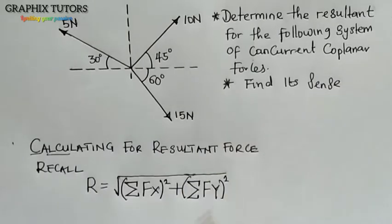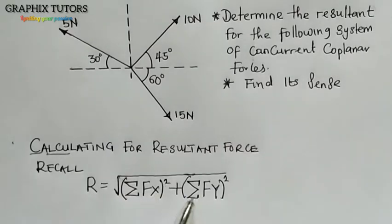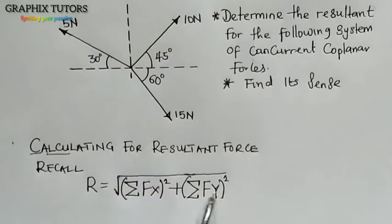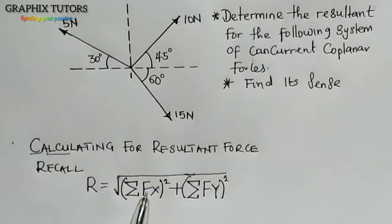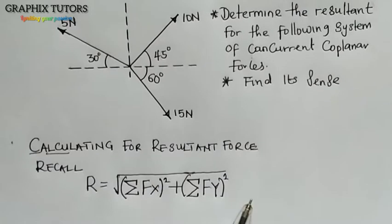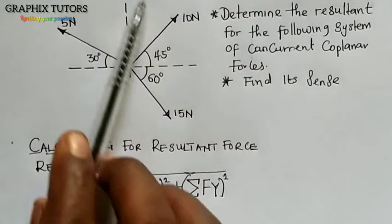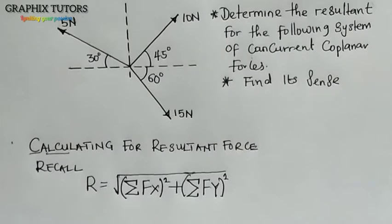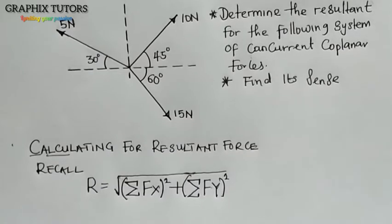In some textbooks, they will call it summation of H squared and summation of V squared, where H means the horizontal component and V means the vertical component — equivalent to Fx and Fy respectively. There are two ways you can go about this. One of the ways is by resolving the forces, using what is called resolution of forces.